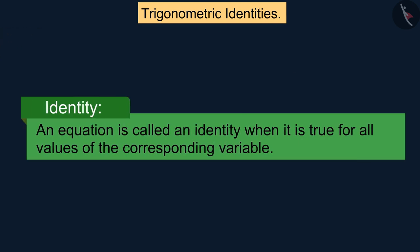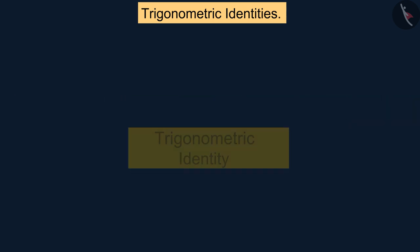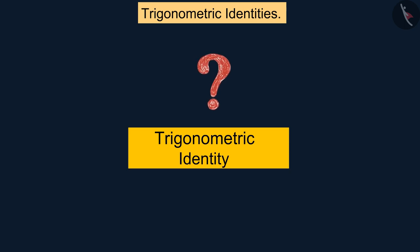We know that an equation is called an identity when it is true for all values of the corresponding variable. But can you tell what is trigonometric identity?